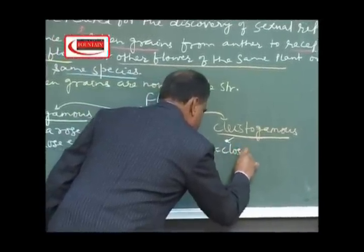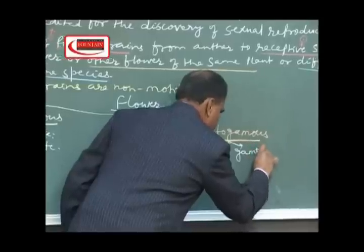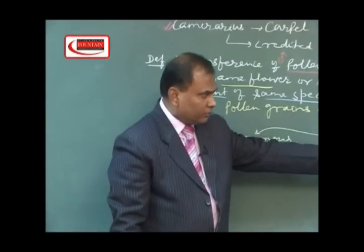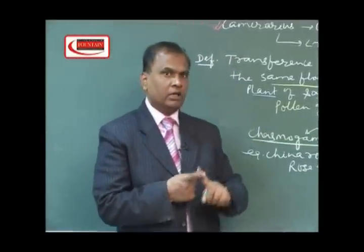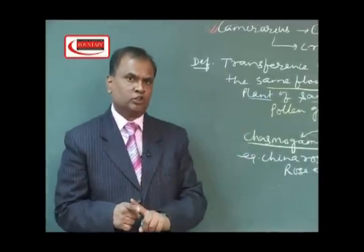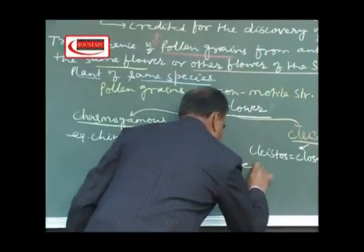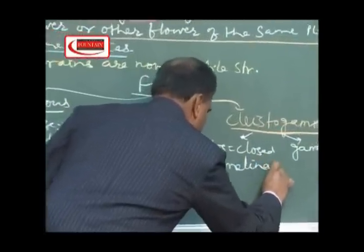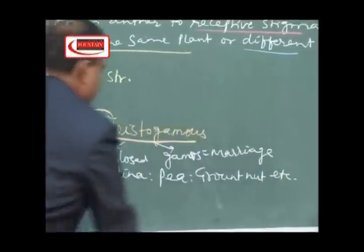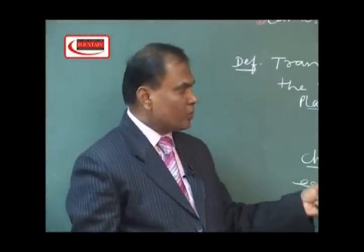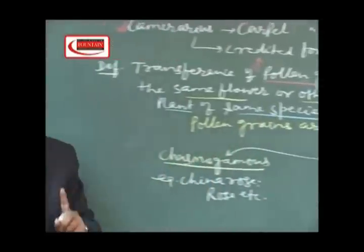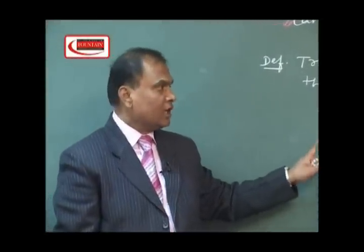Cleistogamous — 'cleisto' means closed and 'gamos' means marriage — so cleistogamous flowers never open fully to expose their mature sex organs for pollinating agents. Typical examples of cleistogamous flowers are Commelina, groundnut, etc. So on the basis of nature — whether the flower is open or closed — flowers are of two types: chasmogamous and cleistogamous.